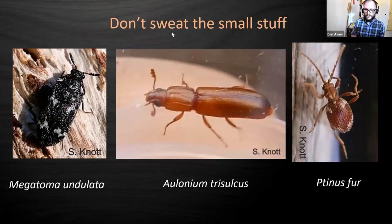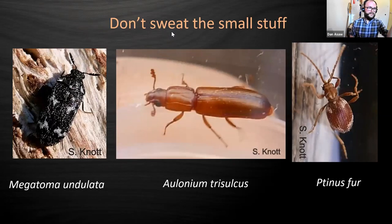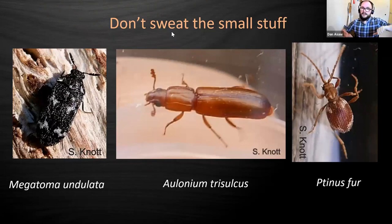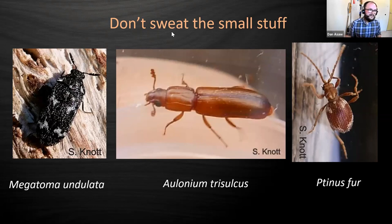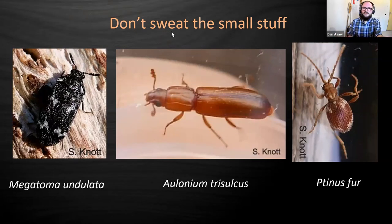One thing I want to address is that people overlook small things, assuming they're incredibly hard to split - that's just not the case. Megatoma here - if something has this jazzy zebra-stripe patination, you can tell what that is, there's nothing else that looks like it. Allonium has a crazy shape with indentations on its pronotum in a fork shape and a clubbed antenna - get a picture and someone can tell you easily. There's also Ptinus - the spider beetles - really funky things.